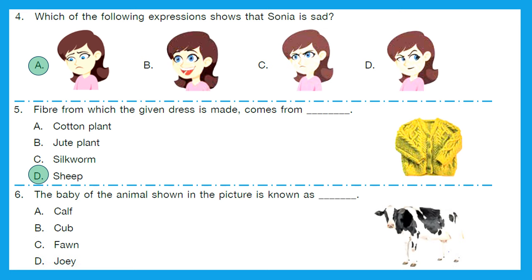Question 6: The baby of the animal shown in the picture is known as? The animal is a cow. The baby of a cow is a calf. Option D is the right answer.